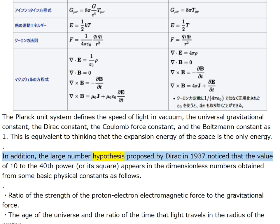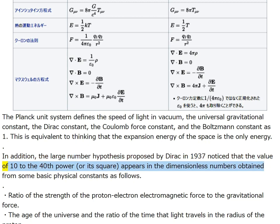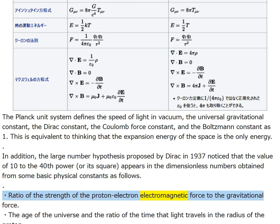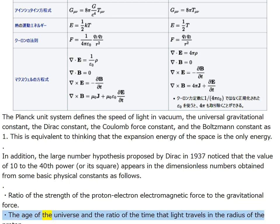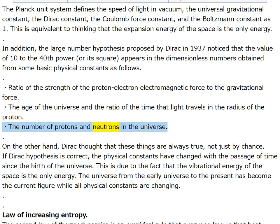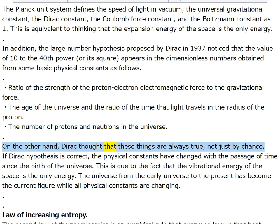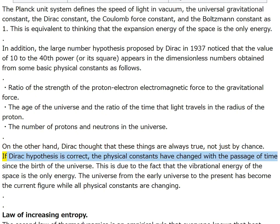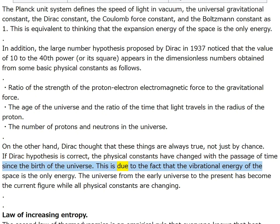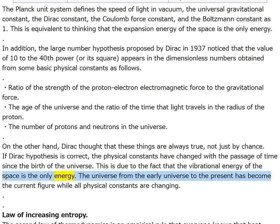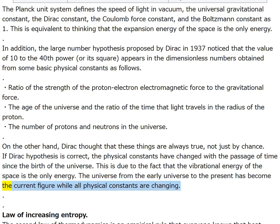The large number hypothesis proposed by Dirac in 1937 noticed that the value of 10 to the 40th power appears in dimensionless numbers from basic physical constants: the ratio of the proton-electron electromagnetic force to the gravitational force; the age of the universe and the ratio of the time that light travels the radius of the proton; and the number of protons and neutrons in the universe. Dirac thought these are always true, not just by chance — meaning physical constants have changed with the passage of time since the birth of the universe.